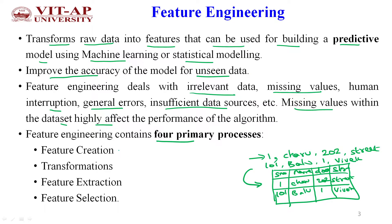The first process is that the ML engineer creates features from raw data. Second is transforming features from one format into another to improve model performance. Third is extracting features from a given input, mostly used for image feature extraction. Finally, we select the most relevant features from the feature set, which may contain 500, 1000, or even 1 lakh features, selecting only those that contribute to the problem statement.